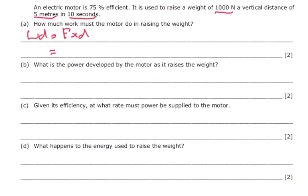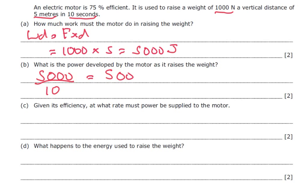Well work done is force times by distance. The force is 1000 times by distance of 5 meters, which is going to give us 5000 joules. What's the power developed by the motor as it raises the weight? Well it's going to be the work done divided by the time taken, which is 10 seconds. So we're going to be 500 watts.